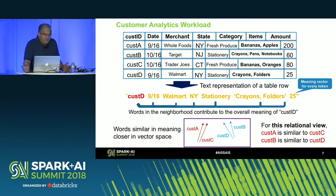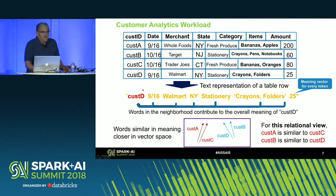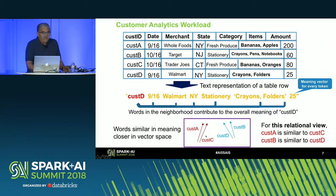For example, tokens such as Walmart, NY, stationary, crayons, folders, and a numeric value of 25 all contribute. If you compare the meanings of two customers, they will be similar if they share similar tokens in the neighborhood used to build the embedding model. Customer A would be similar to customer C because they share tokens like fresh produce and bananas, and customer D would be similar to customer B because they share tokens like stationary and crayons.